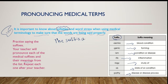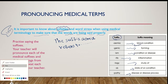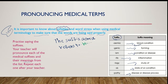The suffix -emia refers to blood condition. The suffix -genic refers to forming — excellent. The suffix -ology refers to the study of. -pathy refers to disease or disease process. This slide is clear, okay?